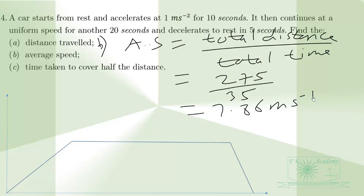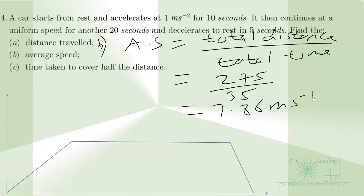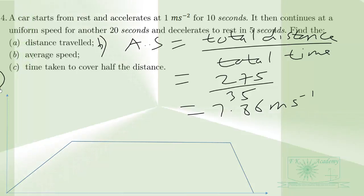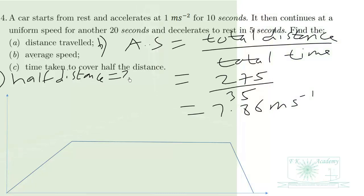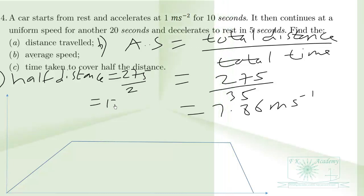For part (c), we calculate the time taken to cover half of the total distance. The total distance was 275 meters, so half the distance is 275 divided by 2, which equals 137.5 meters.